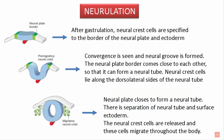Now let's learn about neurulation. This is the neural plate, this is the neural plate border, and this is the ectoderm. After gastrulation — the process by which a blastula of single-layered cells converts into a gastrula of multiple layers — neural crest cells are specified to the border of the neural plate and ectoderm. A neural groove is formed as the neural plate closes to form the neural tube. Neural crest cells lie along the dorsolateral sides of the neural tube. As the neural plate closes into a neural tube, there is a separation of the neural tube and the surface ectoderm, and the neural crest cells are released and migrate throughout the body.